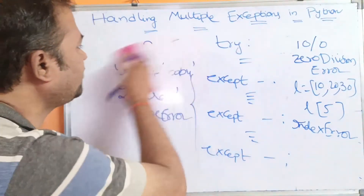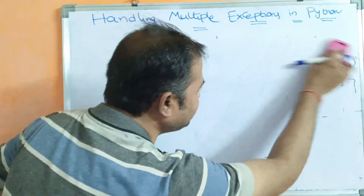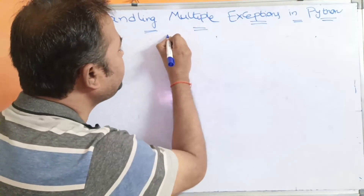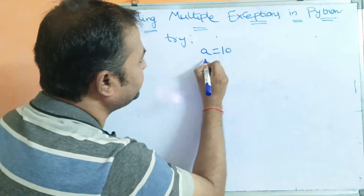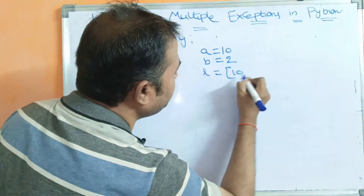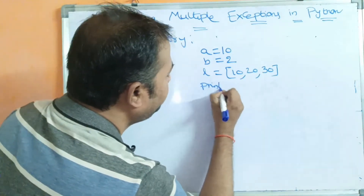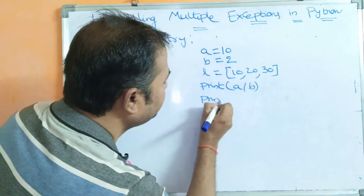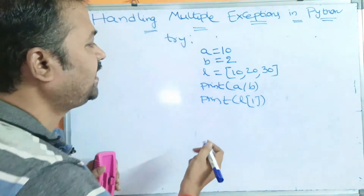Now let's see an example program. In the try block, we define a=10, b=2, and a list L=[10,20,30]. We then print a/b and print L[1] — both are in-range, valid statements that may or may not cause exceptions.